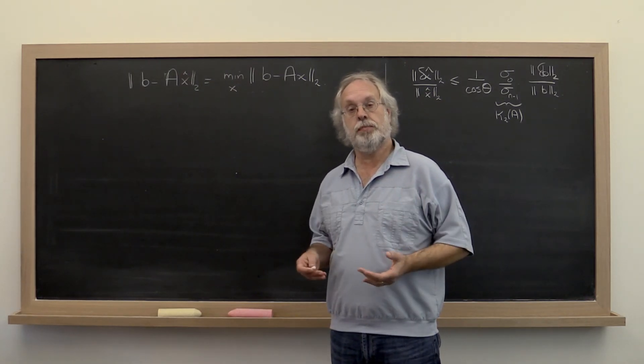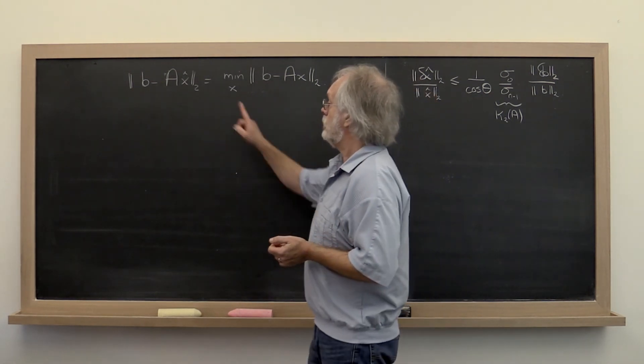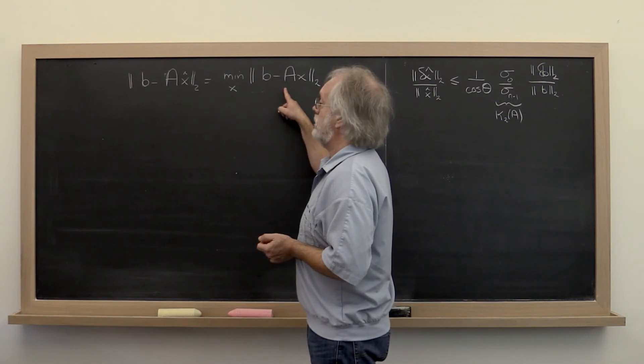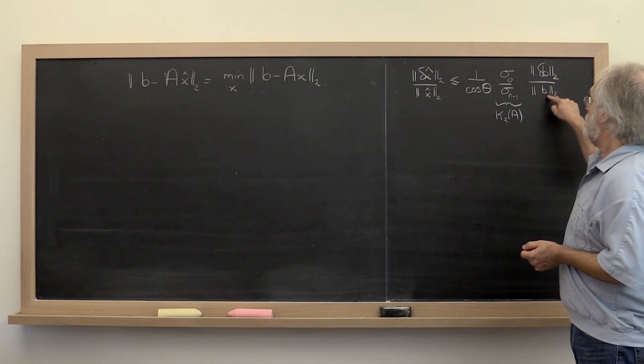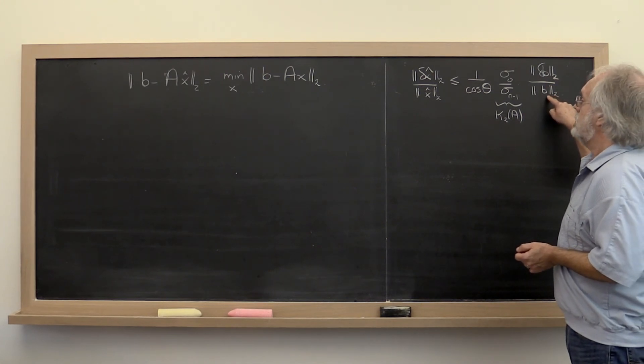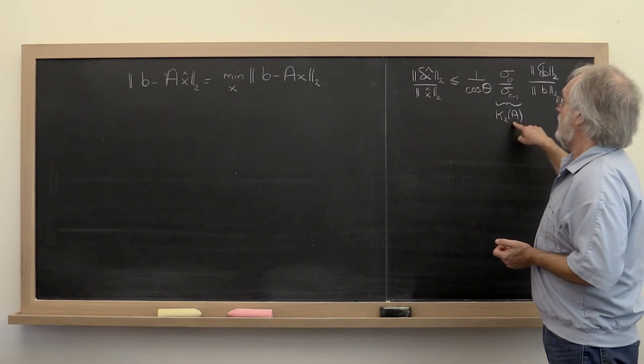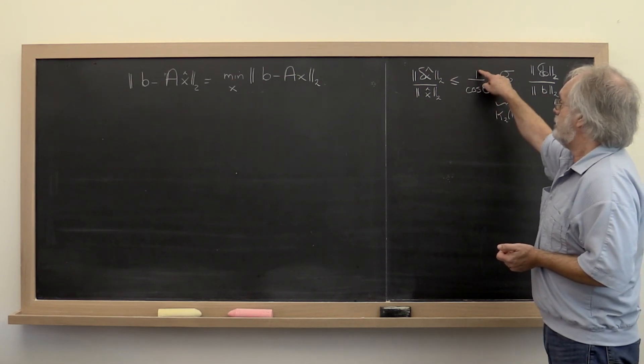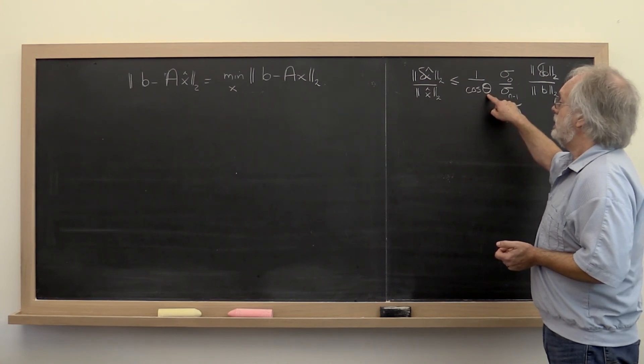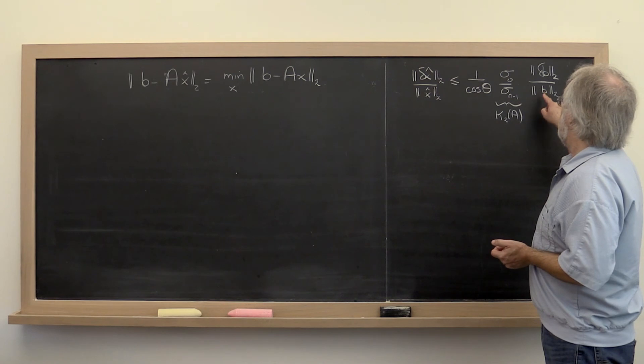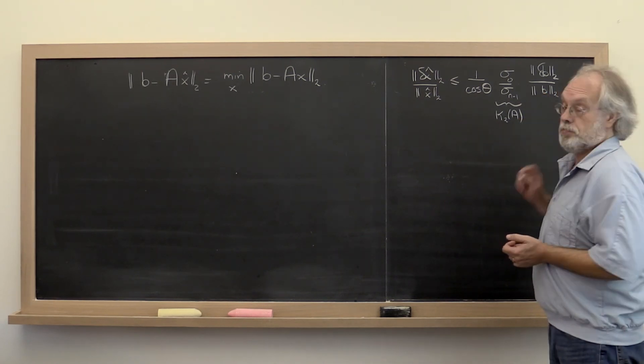Let us summarize what we've learned about the conditioning of the linear least squares problem. We're trying to solve the linear least squares problem. And what we saw was that a relative change in the right-hand side is at most amplified by the condition number of A times this factor 1 divided by the cosine of theta, where theta is the angle between the vector B, the right-hand side, and the column space of A.